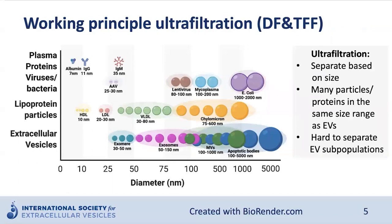Ultrafiltration separates biomolecules based on their size. Therefore, it is important you know the size of the different molecules in the biofluid you are working with, to be able to choose the correct cutoff for your membrane and know which particles and molecules may co-isolate with your EVs. Many different biomolecules — including proteins, viruses, bacteria, lipoprotein particles, and EVs — are in the same size range, and will therefore be hard to separate by ultrafiltration. It is also important to mention that the different EV subpopulations are very close in size, and sometimes even overlap, making it very difficult to separate them from each other with ultrafiltration.